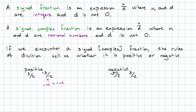We can also take the opposite of a fraction. Three halves is positive, so the opposite of three halves is negative. Negative three halves is negative, so the opposite of negative three halves is positive. The opposite of negative three over negative two is also positive. But the opposite of negative three over negative two is negative. I've put these fractions in parentheses so that it's easy to read with that opposite in front.